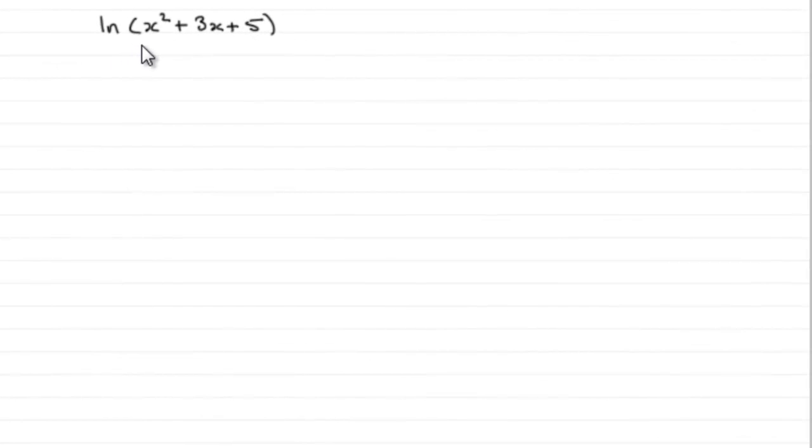Now in the first part of the question, we're asked to differentiate the natural log of x squared plus 3x plus 5 with respect to x. So how do we do this?